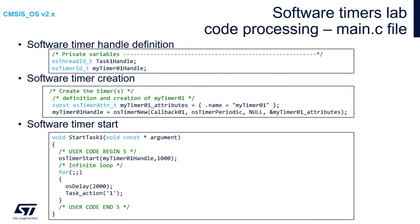Let's have a quick look at the code generated by STM32CubeIDE or STM32CubeMX. We will focus on the main.c file. Within private variables we can see two handlers: one is a handler to our task1, and the second one is a handler to our software timer. At the beginning of the main function, after hardware initialization, we can see the creation of the software timer and our task.